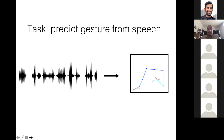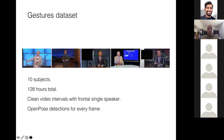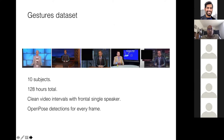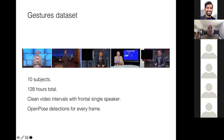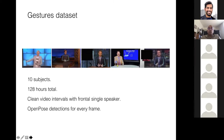Our goal is to train individual models: given the audio track, can we generate the associated gesture? Our system takes an audio signal and produces the corresponding gesture. The dataset has 10 different subjects, 128 hours total, publicly available — talk show hosts, professors, religious preachers, etc. We predict at the level of pose — where are the arms and hands — not at the pixel level.